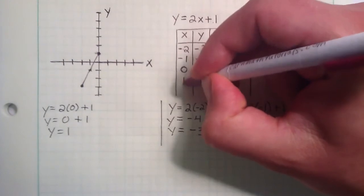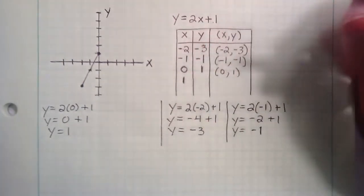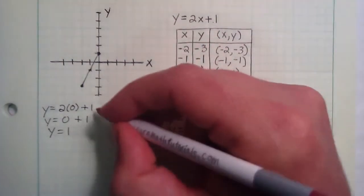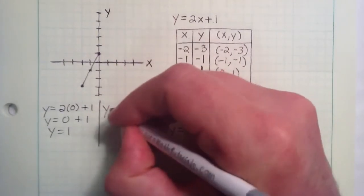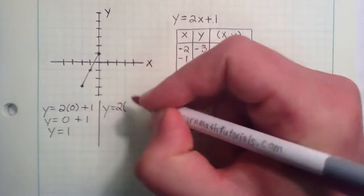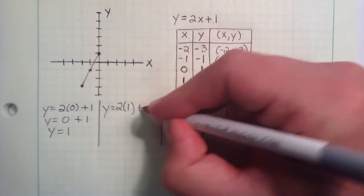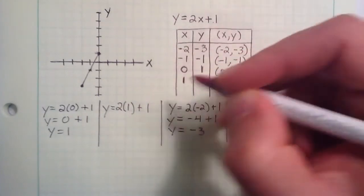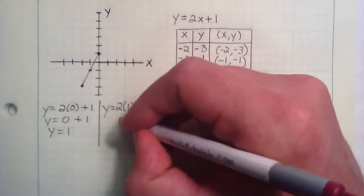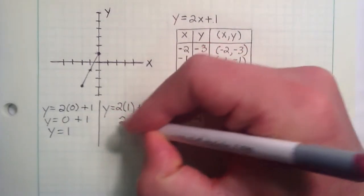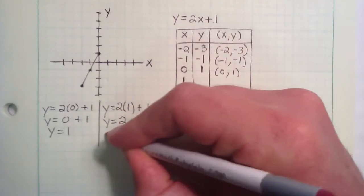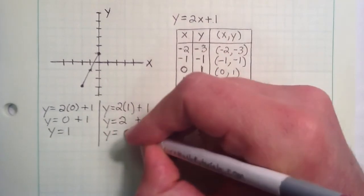We'll do another one here. We'll move over 1 unit to the right in the x direction. And then we'll just do y equals 2x plus 1 again. And this time our x is 1. And then we simply add the 1. So 2 times 1 gives us 2. Plus the 1.